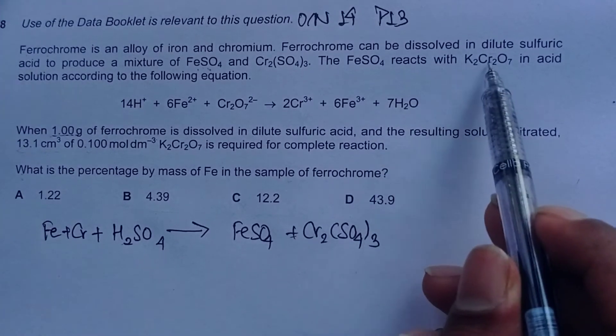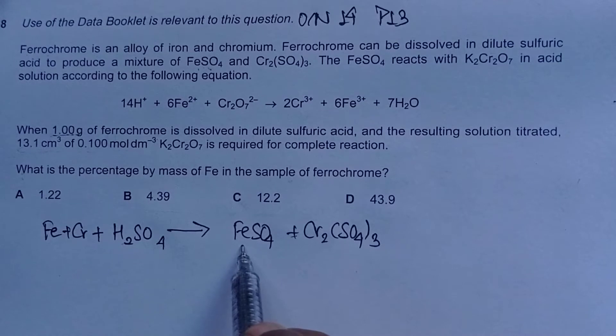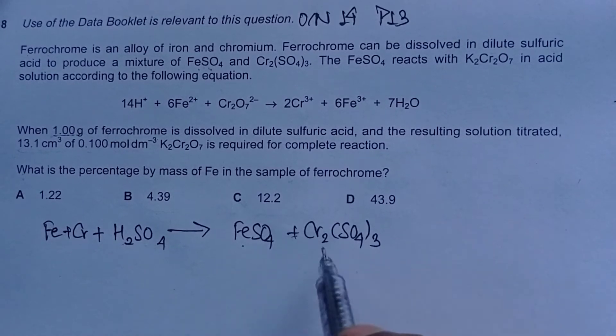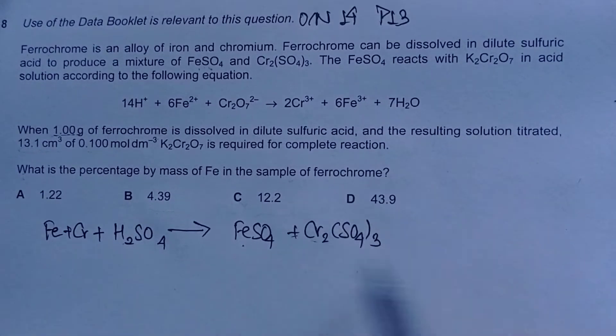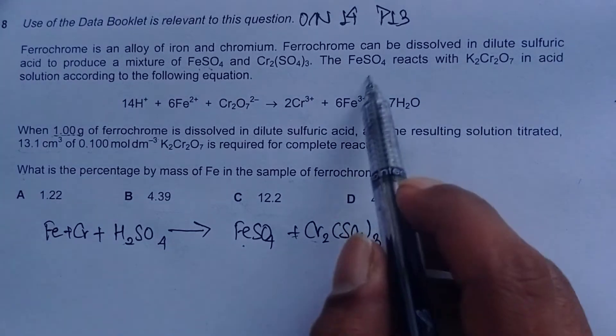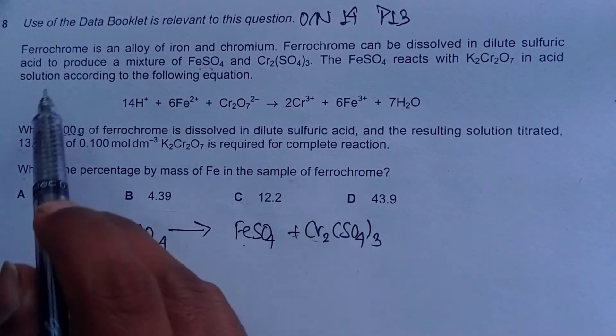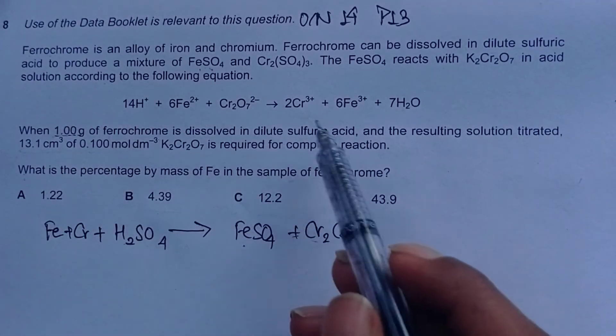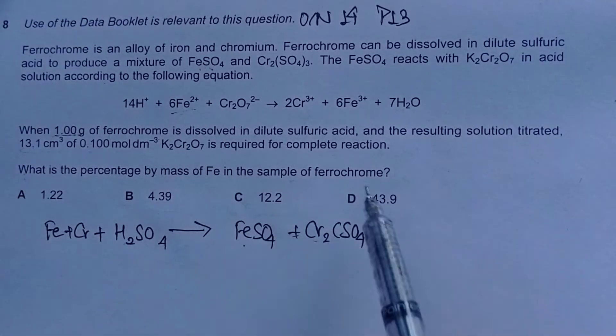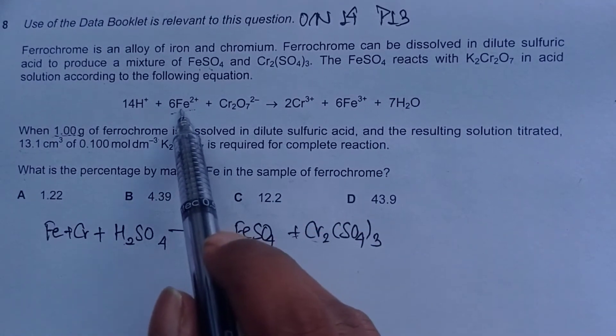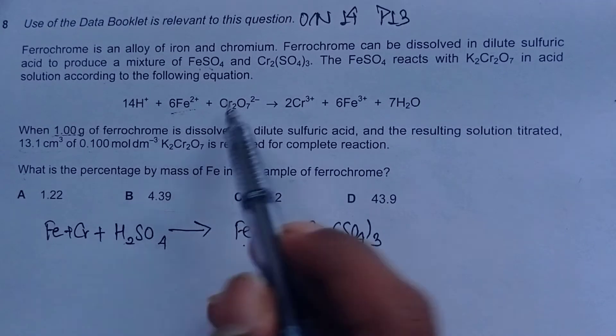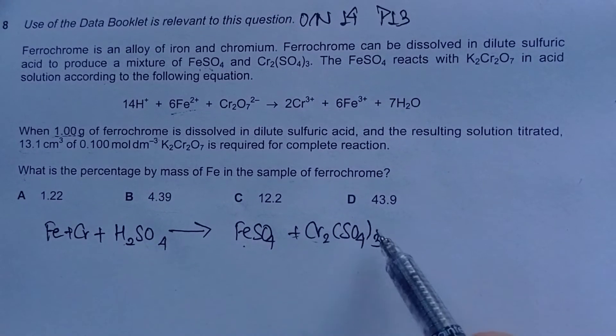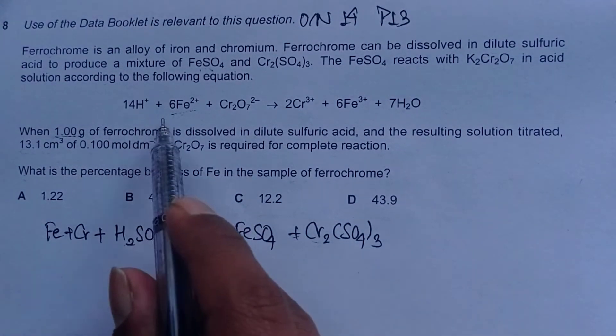The FeSO4 reacts with K2Cr2O7. Only the FeSO4 reacts—the Cr2(SO4)3 is not doing anything for the rest of this question. FeSO4 reacts with dichromate in acid solution according to the following equation. Since sulfate is 2-, iron here is 2+, so we've been given the ionic equation.